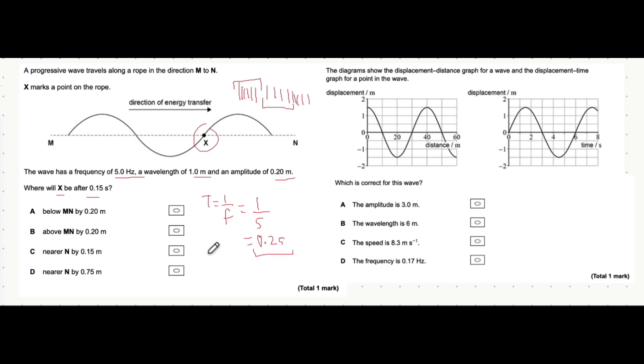The fact that it's asking where x is going to be after 0.15 seconds. If we compare 0.15 to the total time in one whole wavelength, 0.2, we see that it's 3 quarters. That means that it moves 3 quarters of a wavelength in this time.